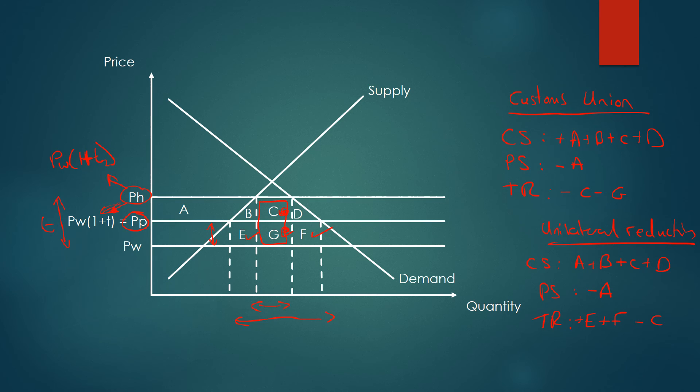If we look at the overall differences between the unilateral reduction and the customs union, consumer surplus is exactly the same in both examples, producer surplus is exactly the same in both examples, but it's tariff revenues that stand out on why customs unions are worse.